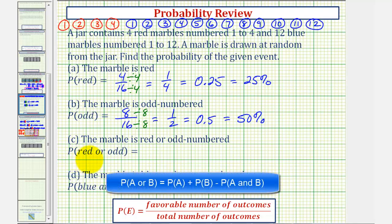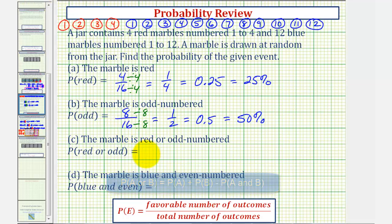We could use a special formula to find this probability, since the event of being red and being odd are not mutually exclusive, meaning a marble can be both red and odd. So we have to be careful not to count any of these marbles twice. So again we're selecting one marble, so total number of outcomes would be sixteen.